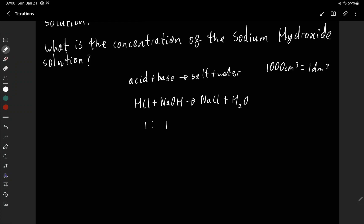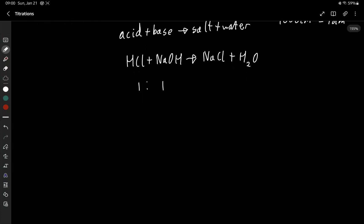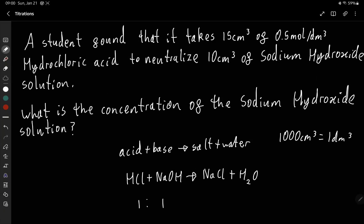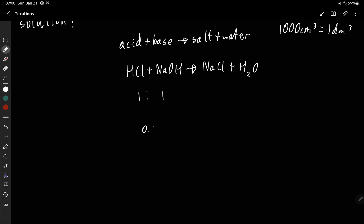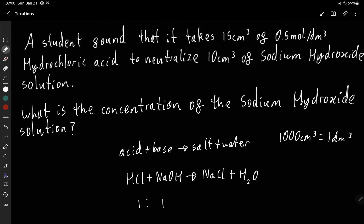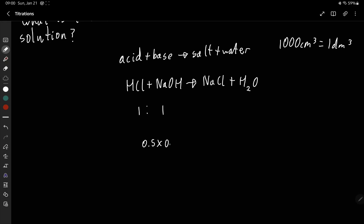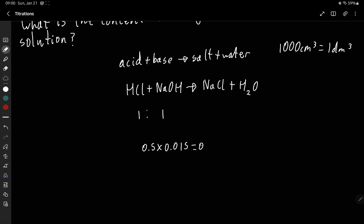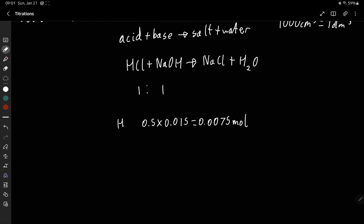So what we need to do now is find the moles of hydrochloric acid in this reaction. So we just do 0.5, because this is already given in decimeters cubed, 0.5 times 0.015—because remember this conversion here—and that gives us 0.0075 mole, and so that's for HCl.